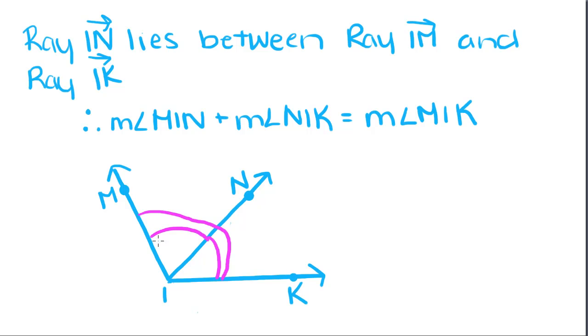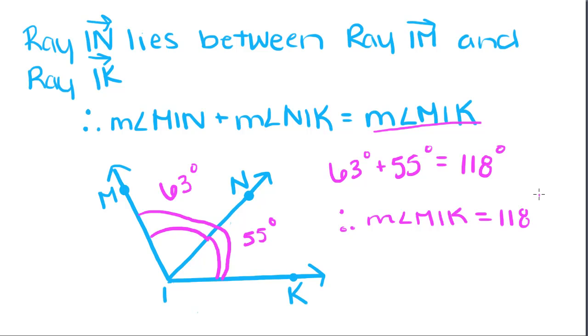So, say I know that the measure of MIN is equal to 63 degrees, and I know that the measure of NIK is equal to 55 degrees. I can take each one of those parts and add them together in order to get what the whole angle is equal to. And if you add 63 plus 55, you get 118 degrees. So, therefore, the measure of angle MIK is equal to 118 degrees.